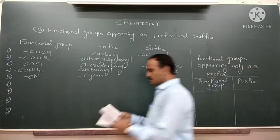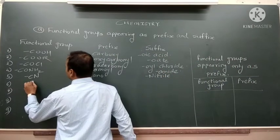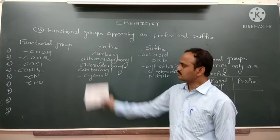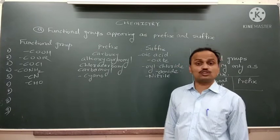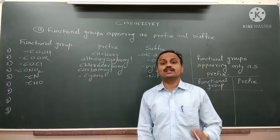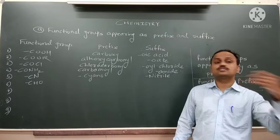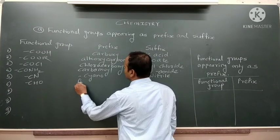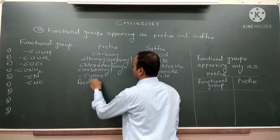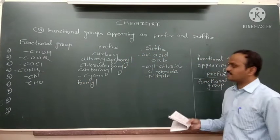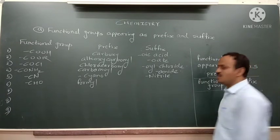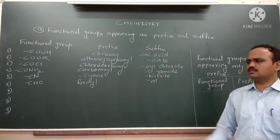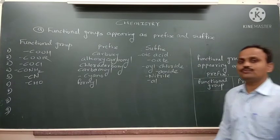Next is –CHO, the aldehyde functional group. When aldehyde is a substituent, then its prefix name is 'formyl'. When it acts as the parent, its suffix name is '-al', for example, ethanal, propenal. These are some names of compounds.